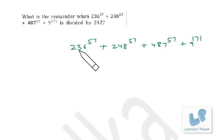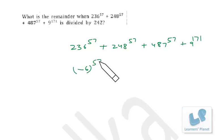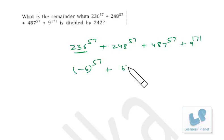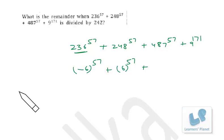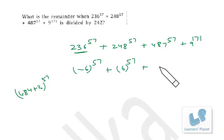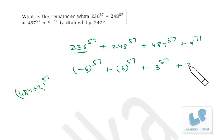236 and 242 differ by 6, so 236 gives remainder -6, and its 57th power gives remainder -6^57. Similarly, 248 is 242+6, so remainder is +6^57. Now 242 doubled is 484, so 487 = 484+3, giving remainder 3^57.